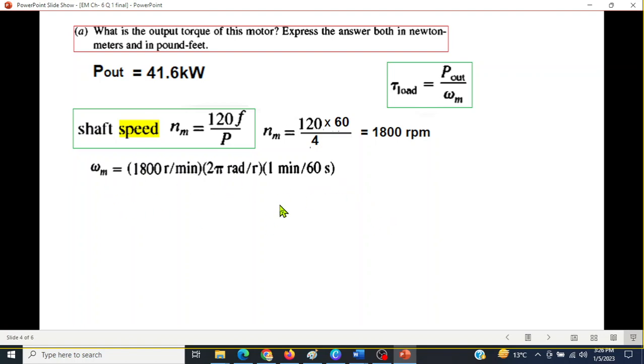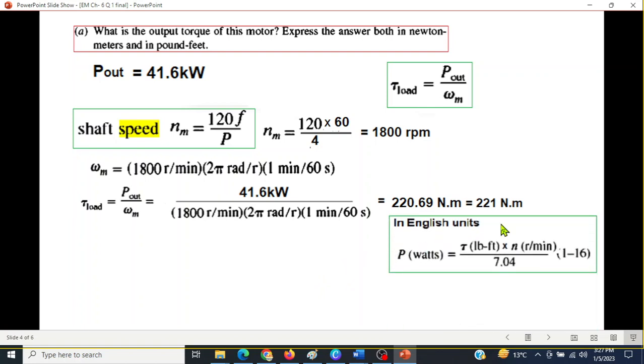Now we can calculate the torque by putting in this formula. Our torque will be 220.69 newton meters which is approximated to be 221 newton meter. So this is the first part. Now we have to calculate in pound feet. Remember that pound feet is used in America.